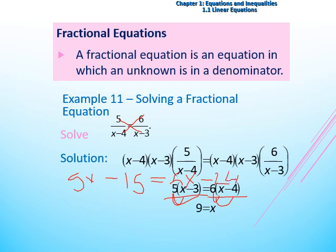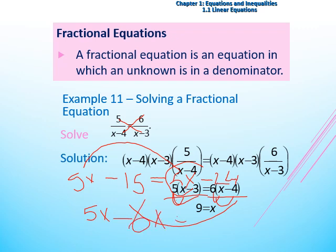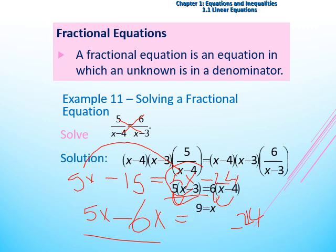Now we get all the x terms on the left-hand side and all the numbers on the right-hand side. So 5x minus 6x equal to 15 minus 24, giving minus x equal to negative 9. Therefore positive x equals 9, and this is the solution.